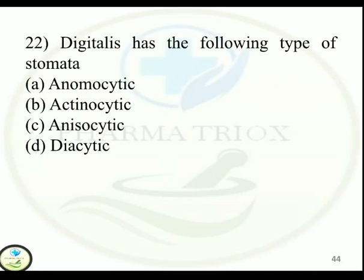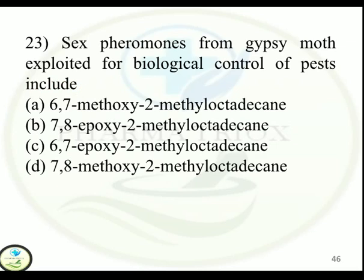Question 23: Sex pheromones from gypsy moth exploited for biological control of pests include — Option A: 6,7-methoxy-2-methyl octadecane. Option B: 7,8-epoxy-2-methyl octadecane. Option C: 6,7-epoxy-2-methyl octadecane. Option D: 7,8-methoxy-2-methyl octadecane. Correct answer is Option B — 7,8-epoxy-2-methyl octadecane.